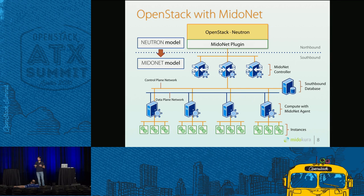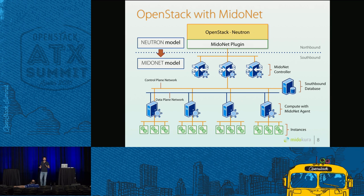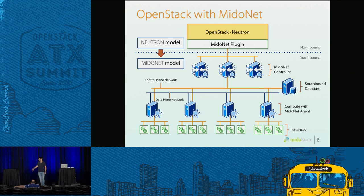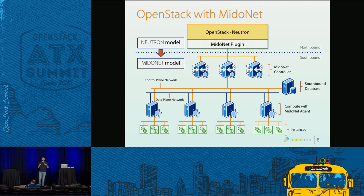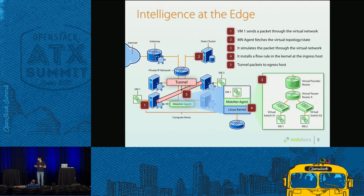A brief overview of how MidoNet works: at the top we have OpenStack and Neutron, which interact through the MidoNet plugin with a controller layer we also call the MidoNet cluster. This layer is responsible for translating the higher-level northbound models from Neutron to our own MidoNet model or southbound layer model, which we store in our own database — for this we leverage ZooKeeper. At the lower layer we have different compute nodes, and on each compute we install software called the MidoNet agent, which is the main software that deals with packet-level functions in network virtualization.